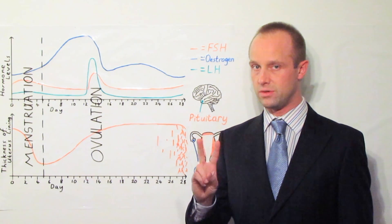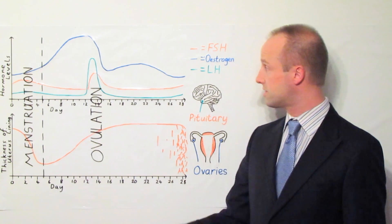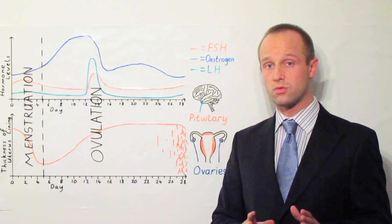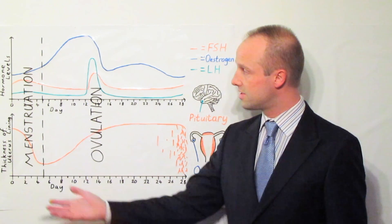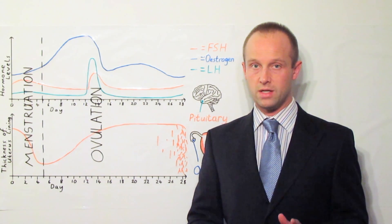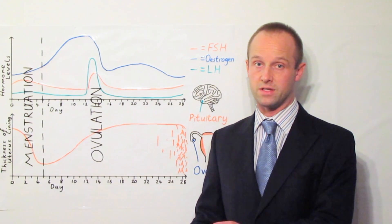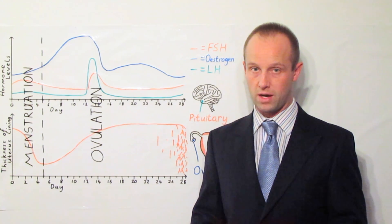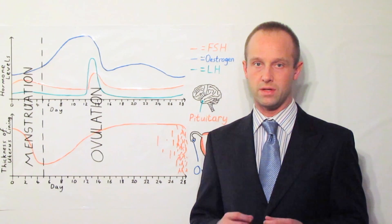There are two more things which you need to be aware of though. Firstly oral contraceptives. Because this whole process is controlled by hormones we can actually use hormones to make sure that a woman isn't fertile so that she isn't able to get pregnant and that's what the contraceptive pill does.